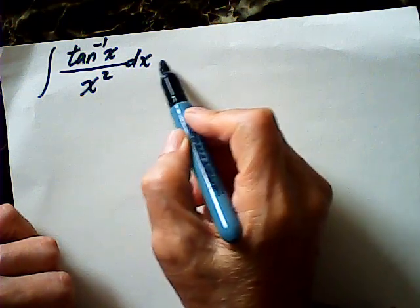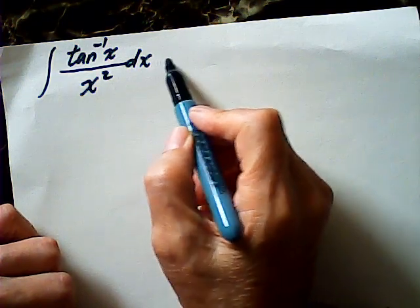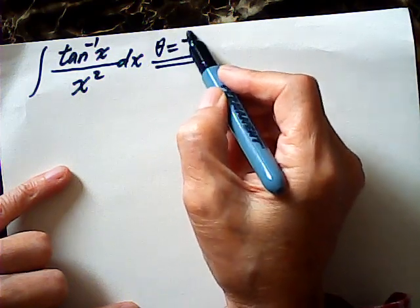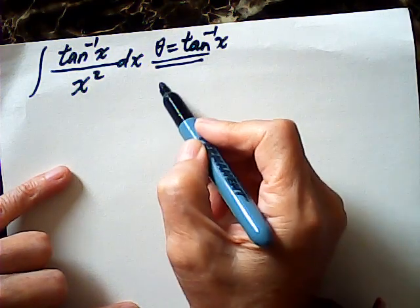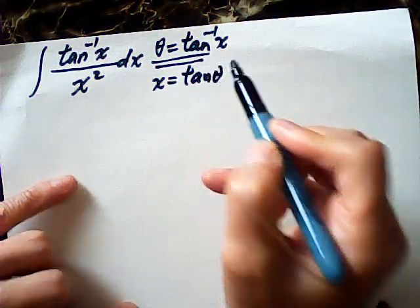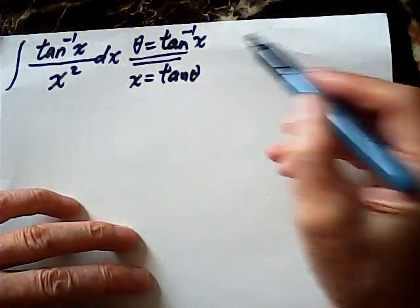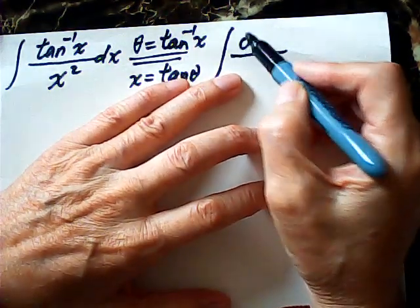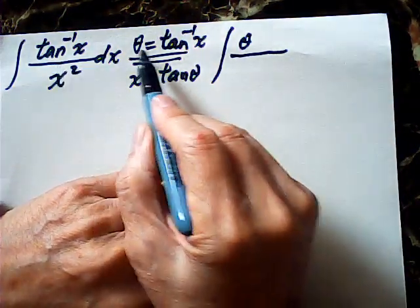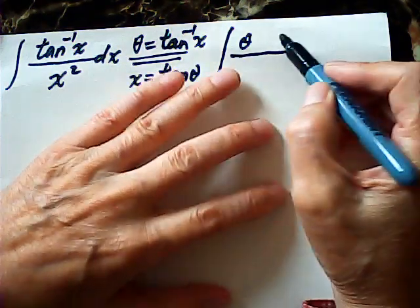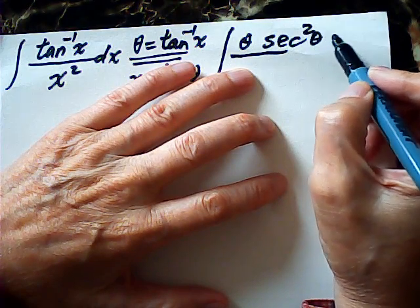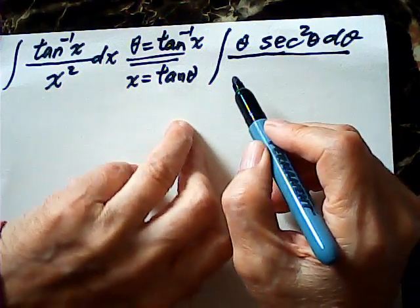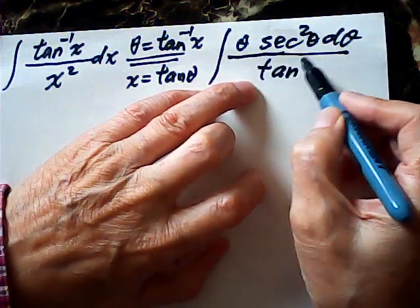For the first method, I let theta be arctangent x, so x is equal to tangent theta. Then the numerator becomes theta — theta is arctangent. Then dx will be secant squared theta d-theta, and x squared will be tangent squared theta.